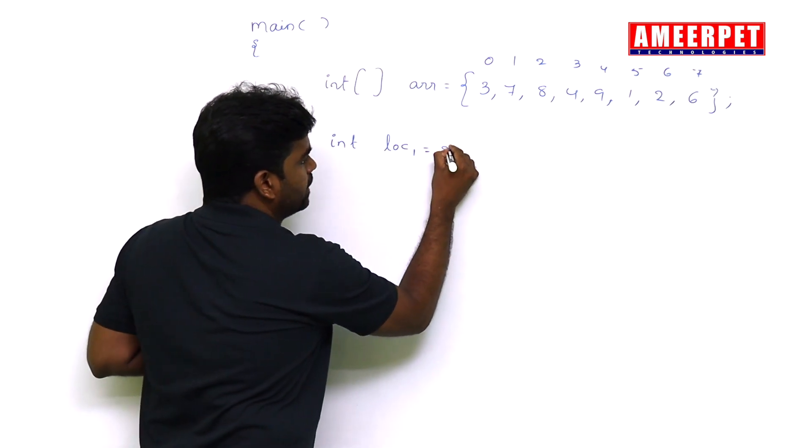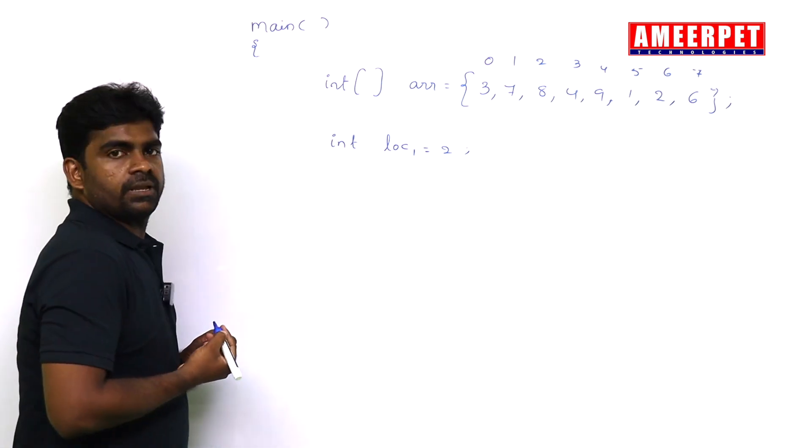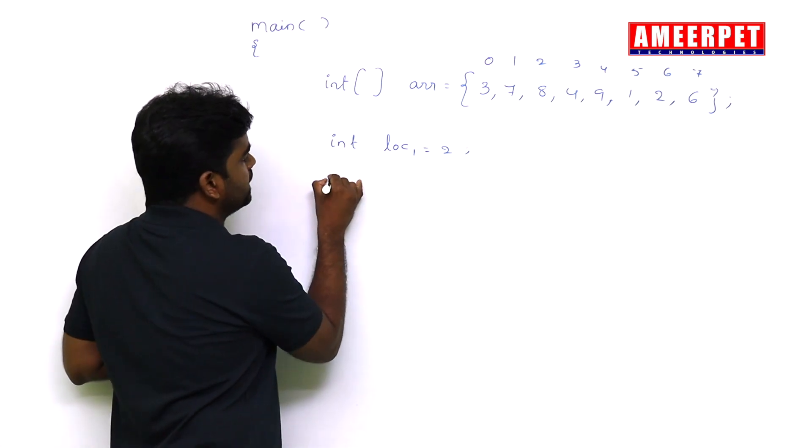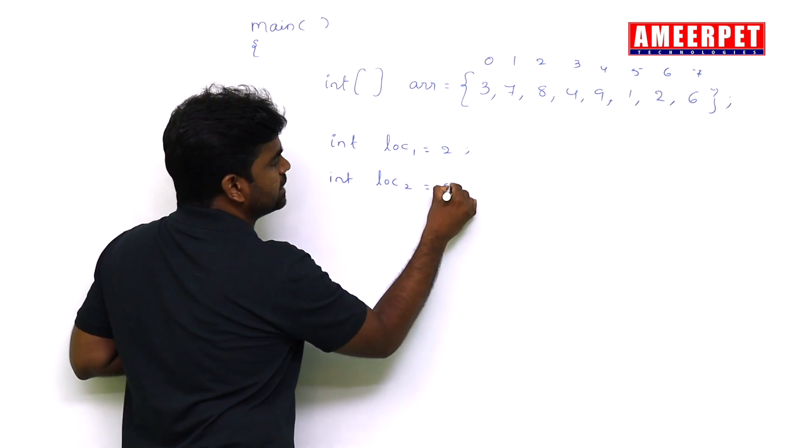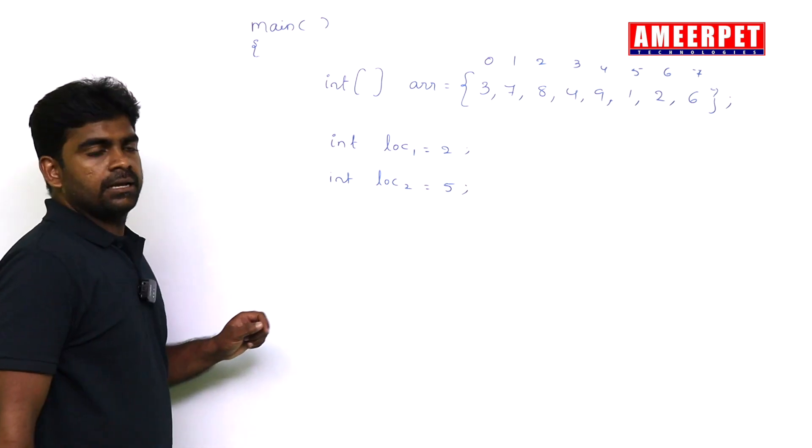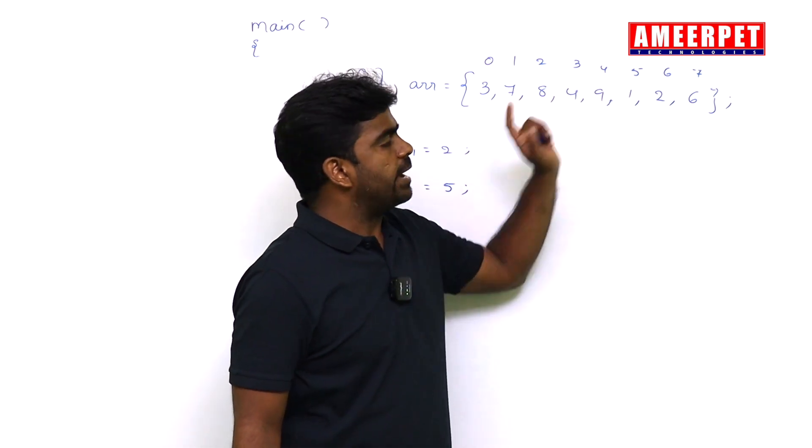Now here location 1, directly I am taking 2. Next one is an integer, location 2. Directly I am taking 5. Second location and fifth location elements I want to swap.